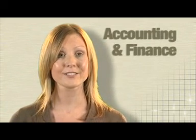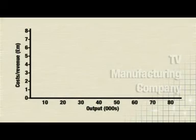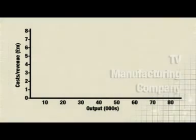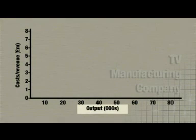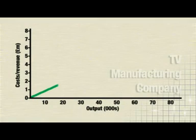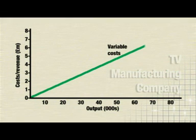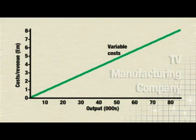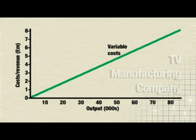This is how variable costs would look on a chart. As you can see, you've got costs up the side and output along the bottom like before. But this time the costs rise with output, because they're linked to output. If the firm wasn't producing anything, the variable costs would be zero because they wouldn't need any parts.